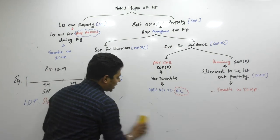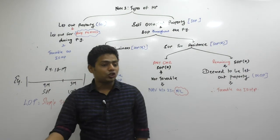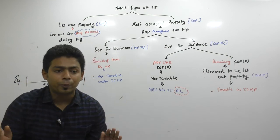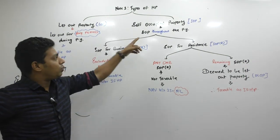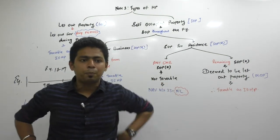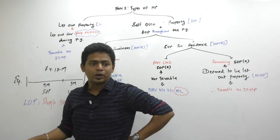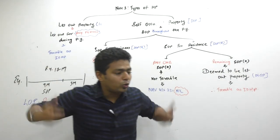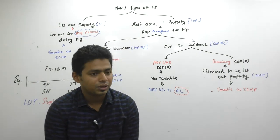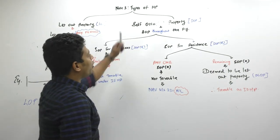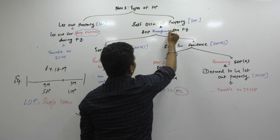Right now, you need to focus on the single status property. This property is a single status — and which single status? LOP. Because to call a particular property as SOP, you need to occupy it throughout the year. What is happening with the property in the previous year is more important. Self-occupied property means property which was self-occupied throughout the previous year.